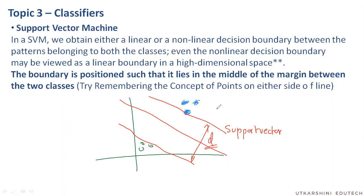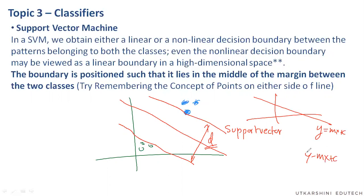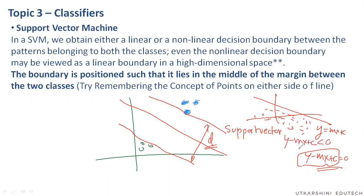If you remember from geometry, if this equation is y equals mx plus c, and y minus mx plus c equals zero is the equation of this line, then all the points falling on one side of the line will make this expression less than zero. All the points on one side of the plane will actually make this equation true, and all the points on the other side will have the exact opposite effect.